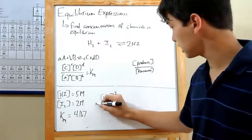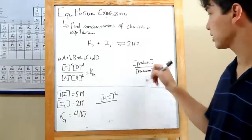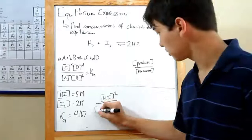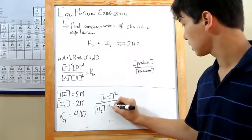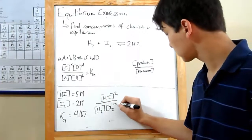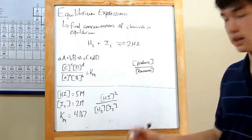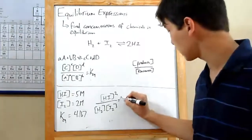So the concentration of HI squared over, and now you write out your reactants. You have H2, whose coefficient is 1, and I2, whose coefficient is 1 again. So we don't really need to show that power. And set that equal to a Keq.